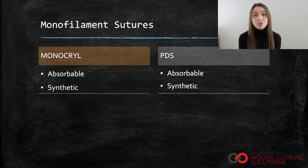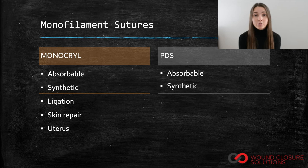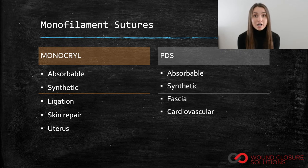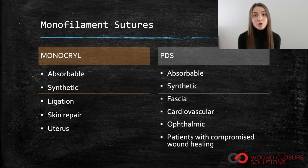Monocryl is generally indicated for ligation, skin repairs, the uterus, and more. Whereas PDS sutures, which take twice as long as Monocryl to fully absorb into tissue, is utilized for fascia, cardiovascular and ophthalmic surgery, and for patients with compromised wound healing.